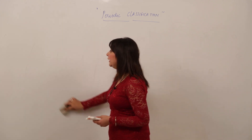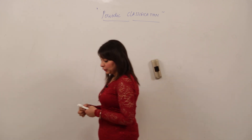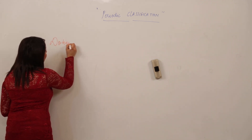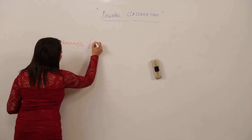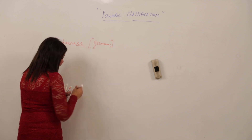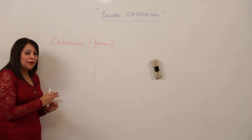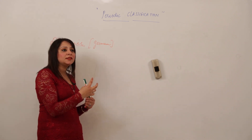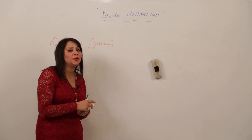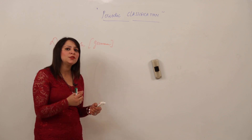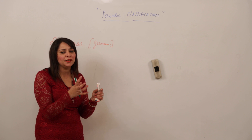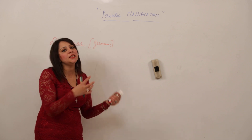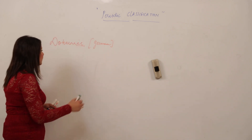The second contribution in classifying elements came from a German chemist called Döbereiner. He made a great effort and, while he didn't succeed in classifying all elements, he was able to correlate certain properties and prove some resemblance between elements.